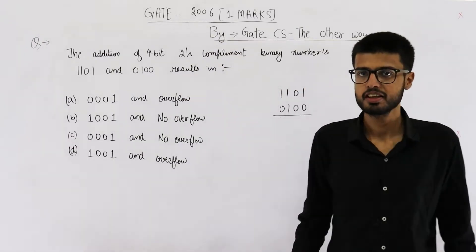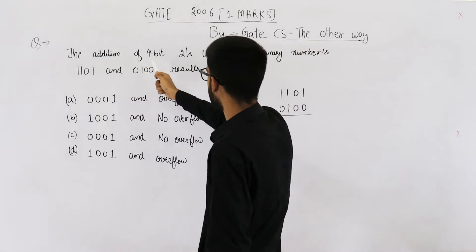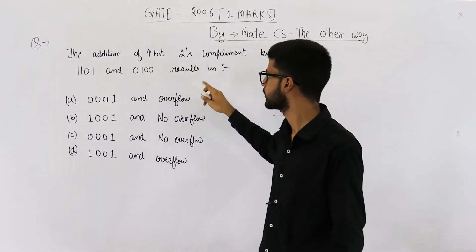Hello dear people. The question is from GATE 2006 exam. It says the addition of 4-bit 2's complement binary numbers results in...